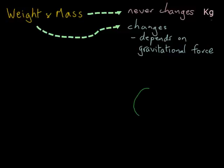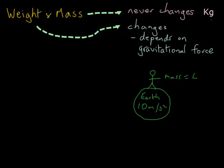If we look at a person on Earth, and Earth has a gravitational force of about 10 meters per second per second, the mass of this person is 40 kilograms and weight equals mass multiplied by gravitational force.